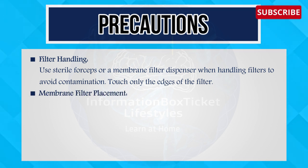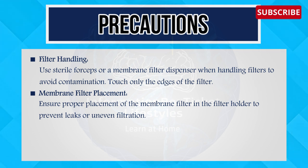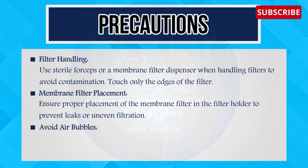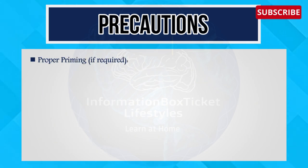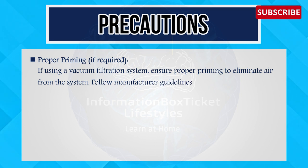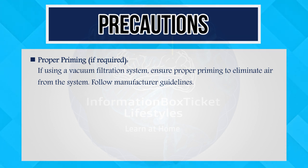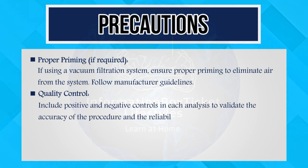Sixth, Membrane Filter Placement — ensure proper placement of the membrane filter in the filter holder to prevent leaks or uneven filtration. Seventh, Avoid Air Bubbles — minimize the introduction of air bubbles during sample filtration as they can impact the accuracy of colony counts. Eighth, Proper Priming — if using a vacuum filtration system, ensure proper priming to eliminate air from the system and follow the manufacturer's guidelines. Ninth, Quality Control — include positive and negative controls in each analysis to validate the accuracy of the procedure and reliability of the results.